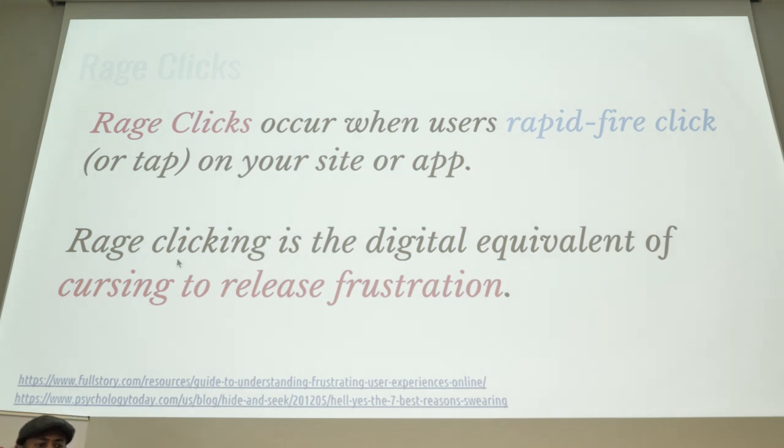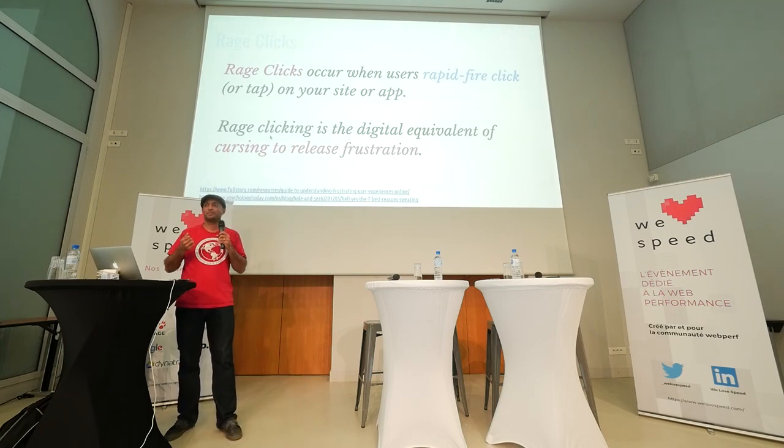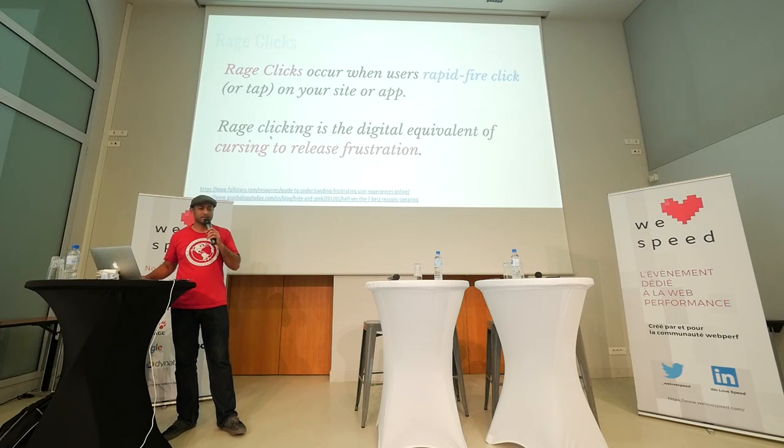Rage clicks is something I'm going to talk about a lot today. When a user rapid-fire clicks on a particular link — not single or double clicking, but three, four, five, even 135 times on the same link in a very short amount of time — it's like they're trying to do something, not getting a reaction, and getting so frustrated they just keep punching, trying to get a reaction. It's the digital equivalent of cursing. Research shows the hormones released in your brain when you curse and when you rage click are about the same, so people feel the same release by doing it. Mouse movements have been one of the earliest things you can capture with JavaScript, so capturing rage clicks is something we can do.